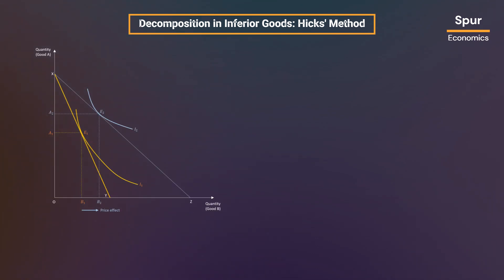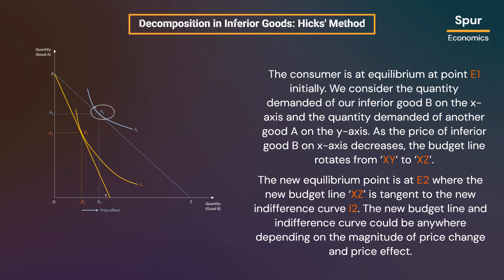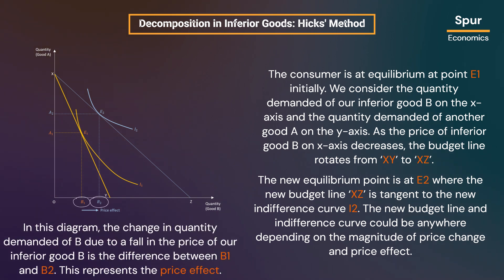Let us take a look at the diagram shown here. The consumer is at equilibrium at point E1 initially. We consider the quantity demanded of our inferior good B on the x-axis and the quantity demanded of another good A on the y-axis. As the price of inferior good B on the x-axis decreases, the budget line rotates from XY to XC. The new equilibrium point is at E2 where the new budget line XC is tangent to the new indifference curve I2. The change in quantity demanded of B due to the fall in price is the difference between B1 and B2, representing the price effect.